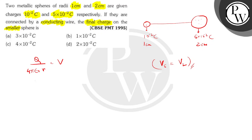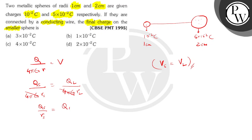Since the potential is constant, we can say that q_small divided by 4 pi epsilon naught r_small equals q_large divided by 4 pi epsilon naught r_large. The 4 pi epsilon naught cancels, so we have finally q_small by r_small equals q_large by r_large.